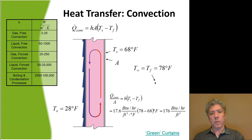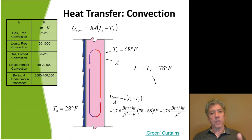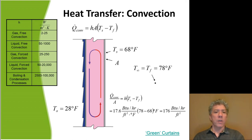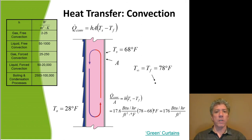Liquids have much higher convective heat transfer coefficients most times. Liquid free convection gives 50 to 1,000 watts per square meter per Kelvin, and under forced convection you can go up about another order of magnitude. So forcing convection — not free convection — gives you about an order of magnitude of heat transfer rate improvement.